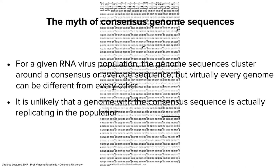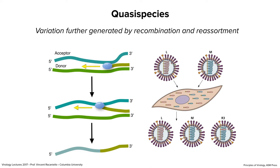Mutation is not the only contributor to the quasi-species — recombination and reassortment also contribute. When an RNA molecule is being copied by a polymerase, sometimes the polymerase switches templates, producing a recombinant of two molecules. For viruses with segmented genomes like influenza, reassortment allows RNA segments to be swapped among different virus particles that co-infect the same cell. So mutation, recombination, and reassortment all contribute to the quasi-species.